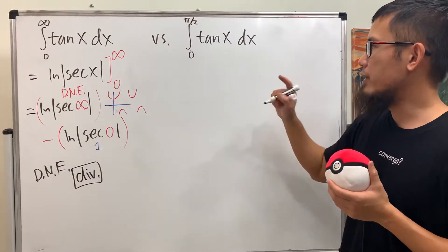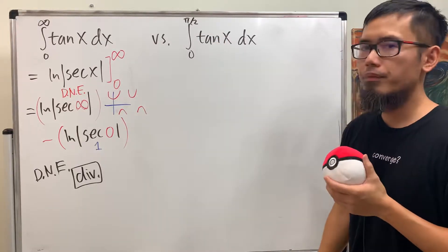Now, have a look right here. This time we have from 0 to π over 2. Why is this improper though?